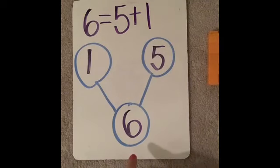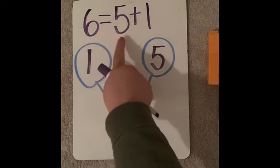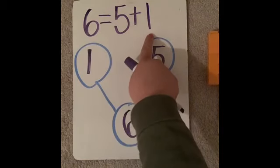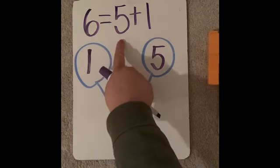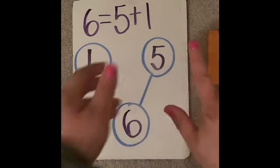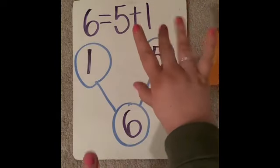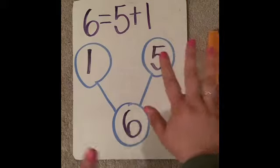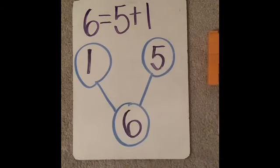Did you come up with the same thing? Let's read this sentence: six is the same as five and one. Another way to say it is six equals five plus one. All that means is that if you have six altogether, you could break them into groups of five and one — I still have six, but they're in two separate groups, just like in our two separate part circles. Let me add that to our list of hidden partners.